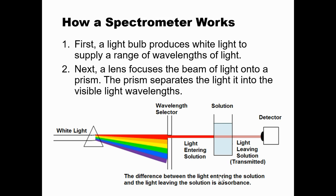A spectrometer is not a complicated machine. First, a light bulb produces white light to supply a range of wavelengths of light—you want the full range because you want to be able to split it up to all the colors of the rainbow. Next, a lens focuses the beam of light onto a prism.